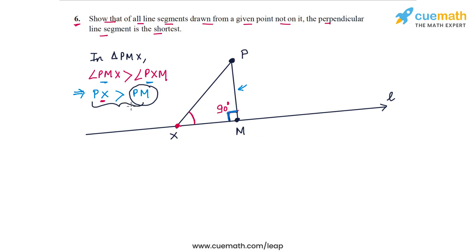And basically, the key idea behind this proof is very simple. In any right angle triangle, the hypotenuse must be longer than any side. So in this right angle triangle PMx, Px must be greater than PM, and this basically proves that PM is the shortest possible segment that you can draw from P onto the line L.